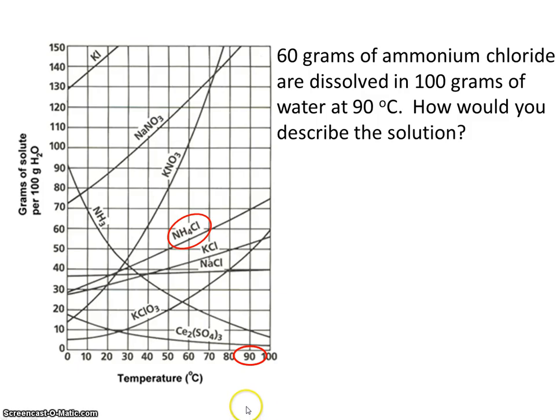At 90 degrees C, if we go up and over, we discover that the saturation amount for ammonium chloride is 70 grams will dissolve in 100 grams of water. So if 70 is the saturation amount but our solution only has 60, what type of solution is that? That's right, that's an unsaturated solution.